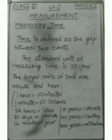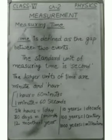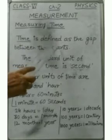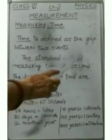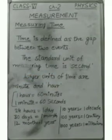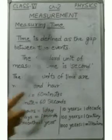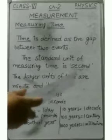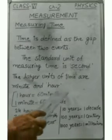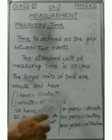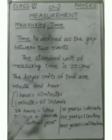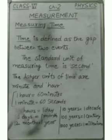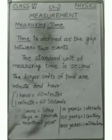So our next topic is measuring time. First of all, what is time? Time is defined as the gap between two events. The standard unit of measuring time is second. The larger units of time than second are minute and hour. And you all know the relation between these three units: 1 hour is equal to 60 minutes, 1 minute is equal to 60 seconds.